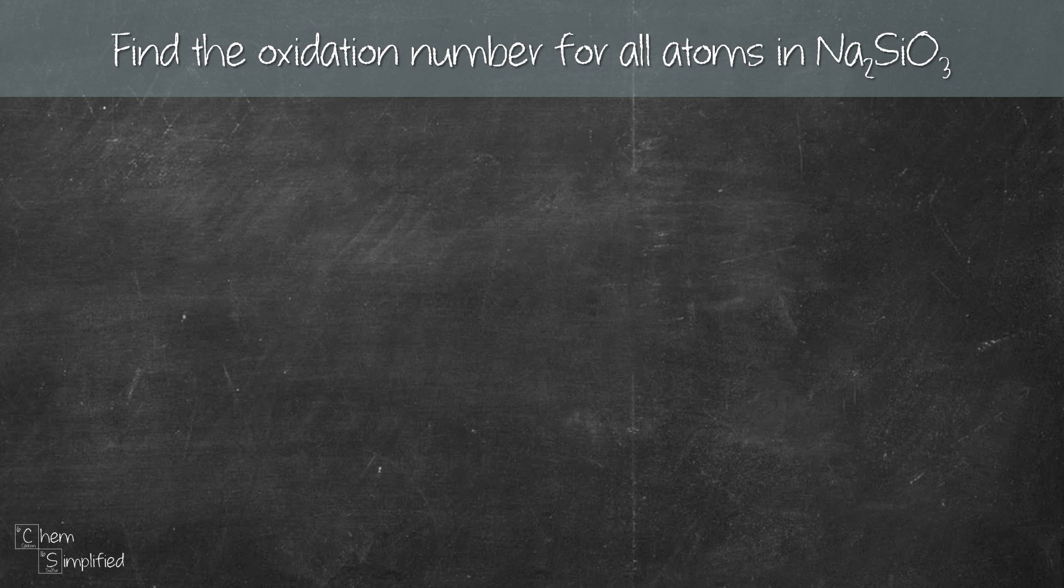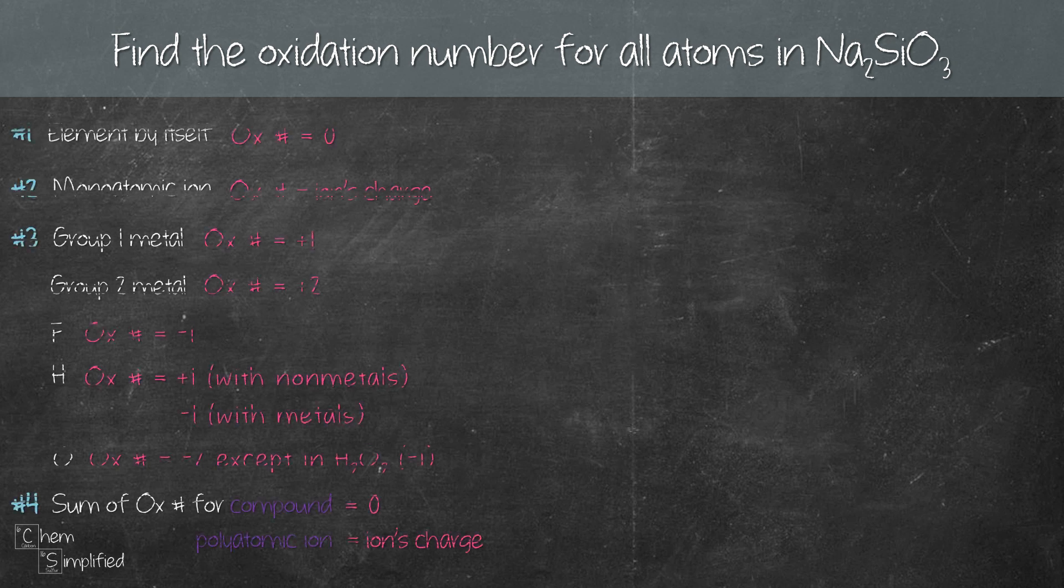There are three types of atom present in this compound which are Na, Si and O, and we can easily find their oxidation numbers using these rules.